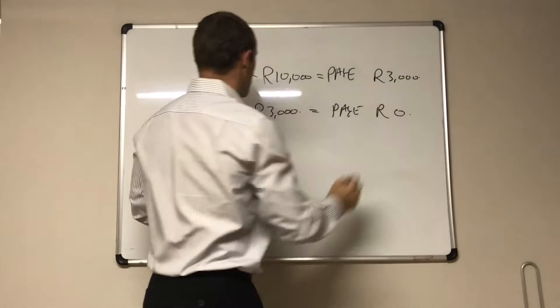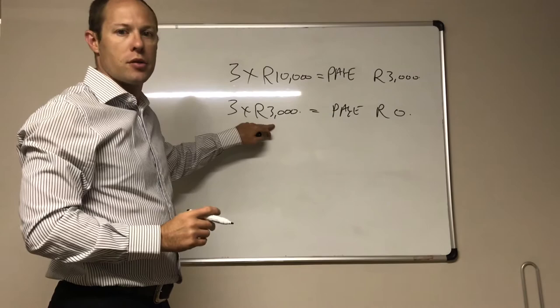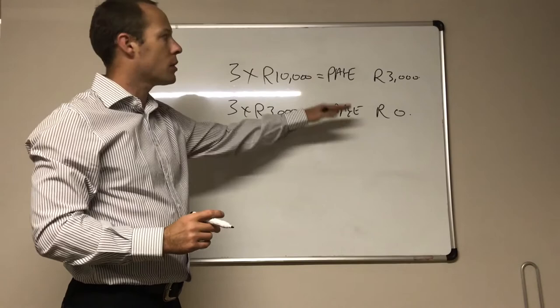My three ETI employees receive 3,000 a month with no pay as you earn deductible from them. So my total pay as you earn bill for the month would be 3,000.